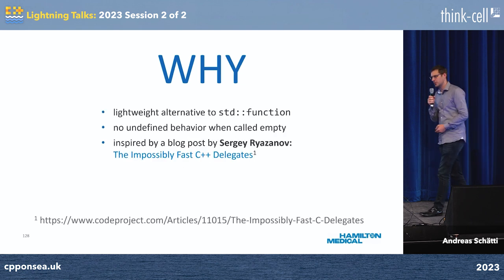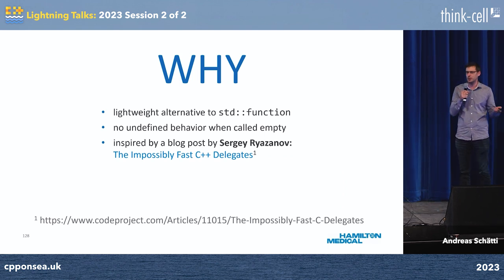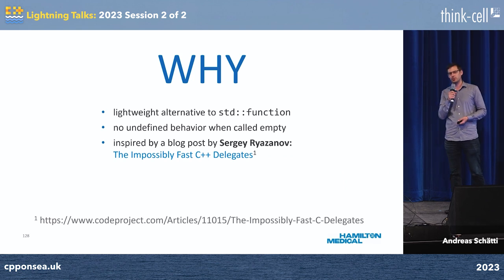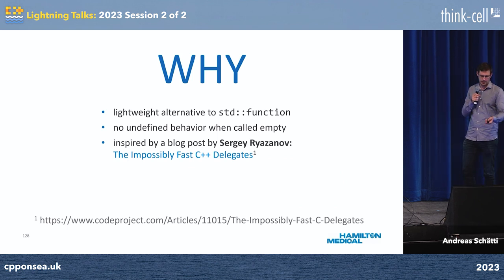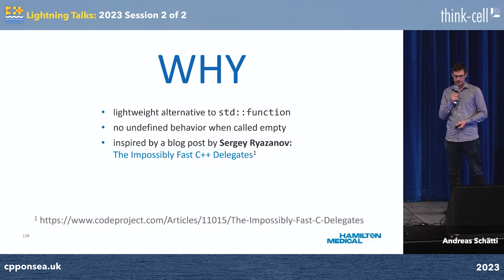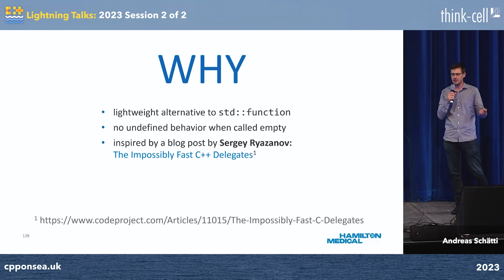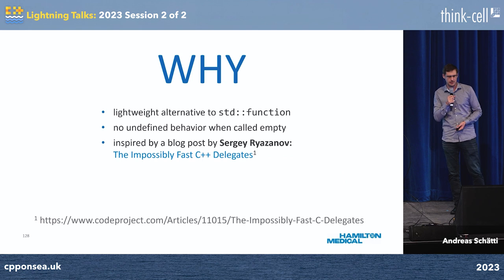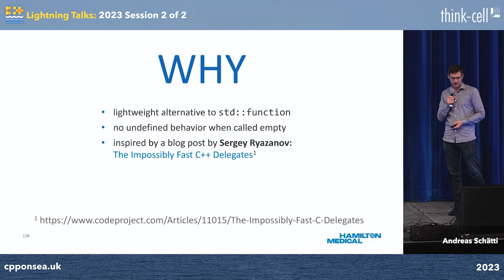So why not just use std::function? Well, std::function is pretty heavyweight — we wanted something lightweight. It has type erasure and does dynamic memory allocation sometimes. We looked at a blog post by Sergei Ryazanov, who has an implementation of function wrappers, but there is a slight problem: if you don't assign any callable to it, it's actually undefined behavior to call it. So that was the motivation to build this library — CppDelegates.